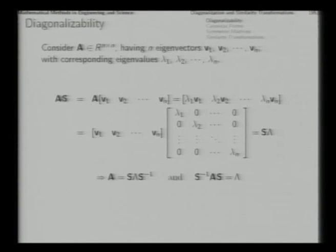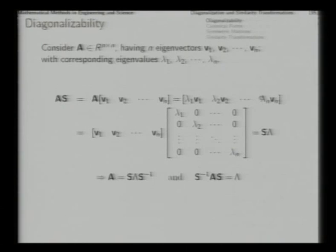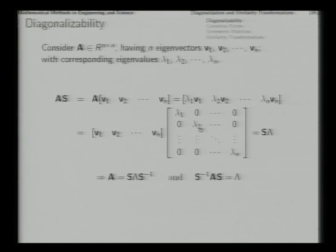The first column of the product A times S is A times v1. Since v1 is an eigenvector with eigenvalue lambda1, A·v1 = lambda1·v1. Similarly the second column of the product will be A·v2 = lambda2·v2, and so on. We claim that the same product is obtained if we multiply S from the right with a diagonal matrix having the eigenvalues as the diagonal entries. The first column of that product is v1·lambda1 + v2·0 + v3·0 + ... = lambda1·v1.